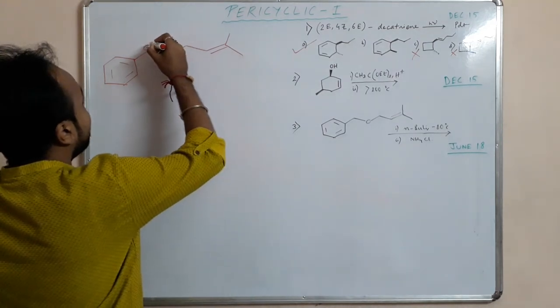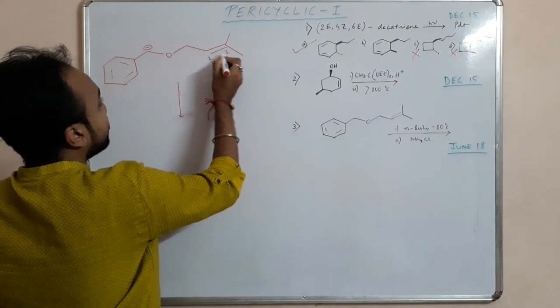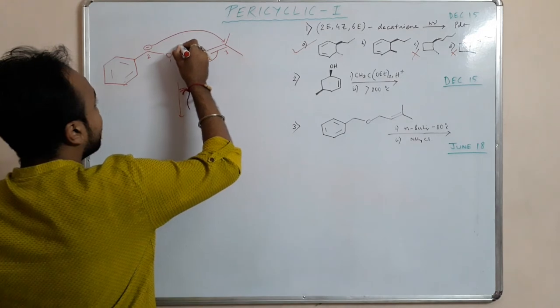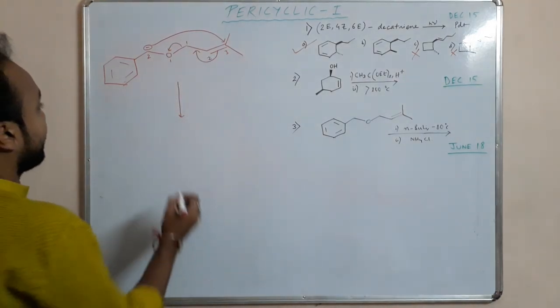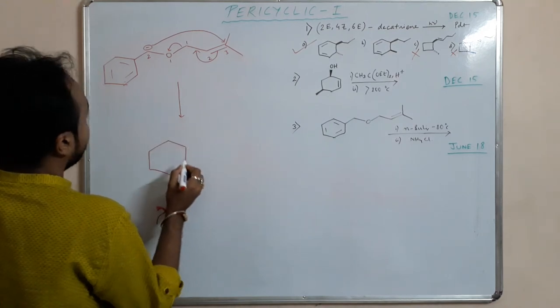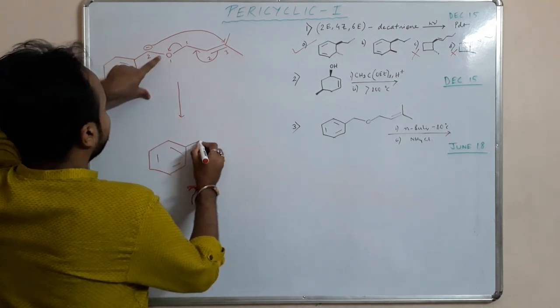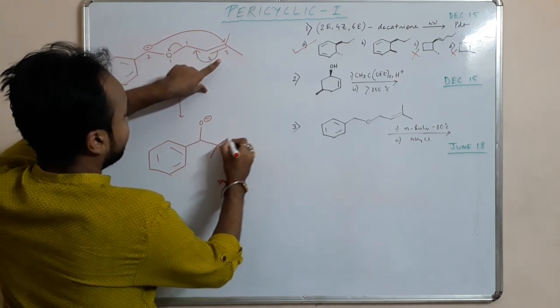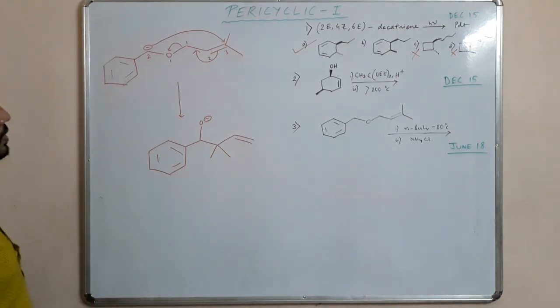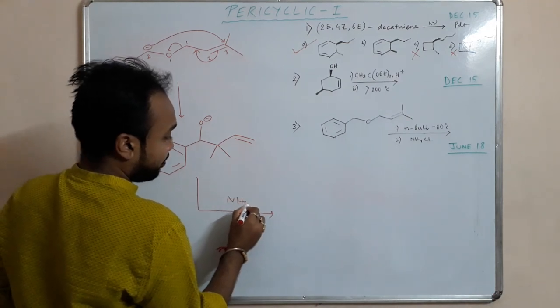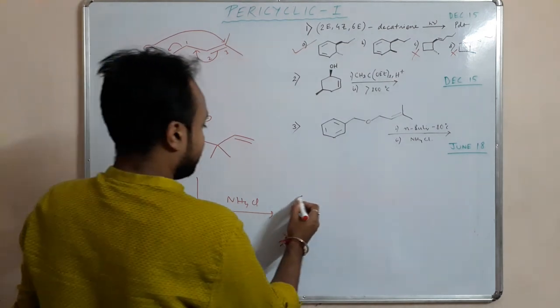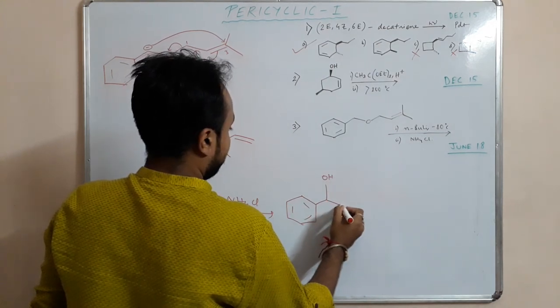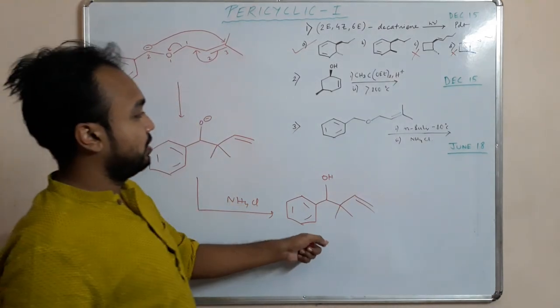Just number it - 2,3, this is 1, this is 1, this is 2. It is a 2,3-sigmatropic. Here it will come here. And what happens? This one, here we have O minus, then this one, then we have this carbon, then this carbon. Then we have given NH4Cl, that is the source of proton, so this will get protonated to form this product. This is the product.